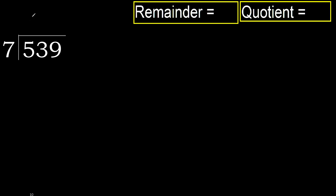539 divided by 7. 5 is less than 7, therefore move to the next digit. 53 is not less, therefore we work with 53.